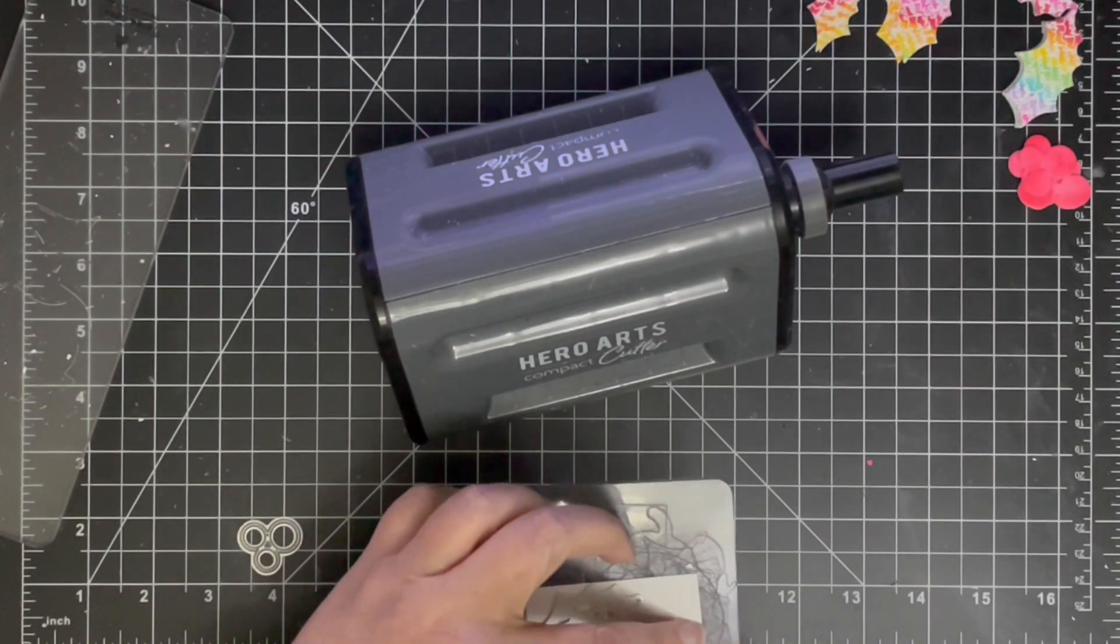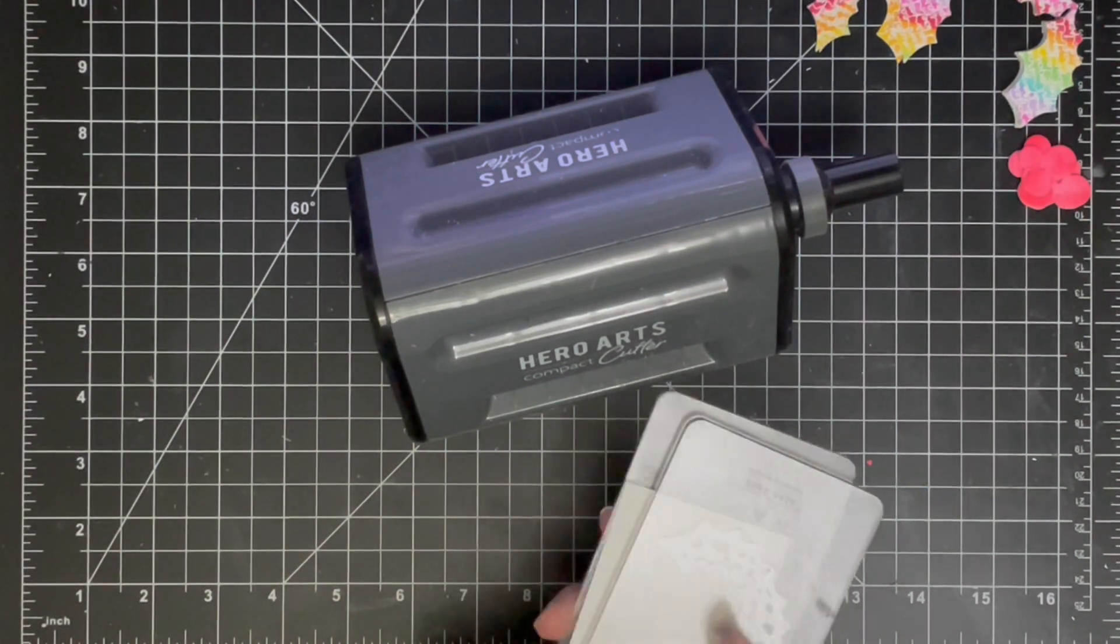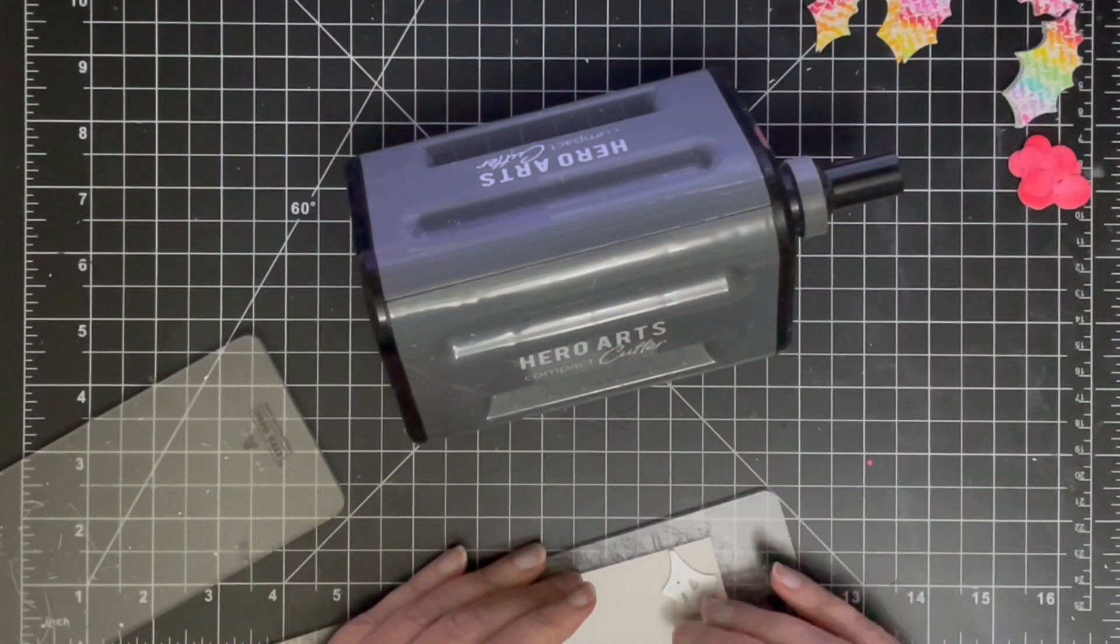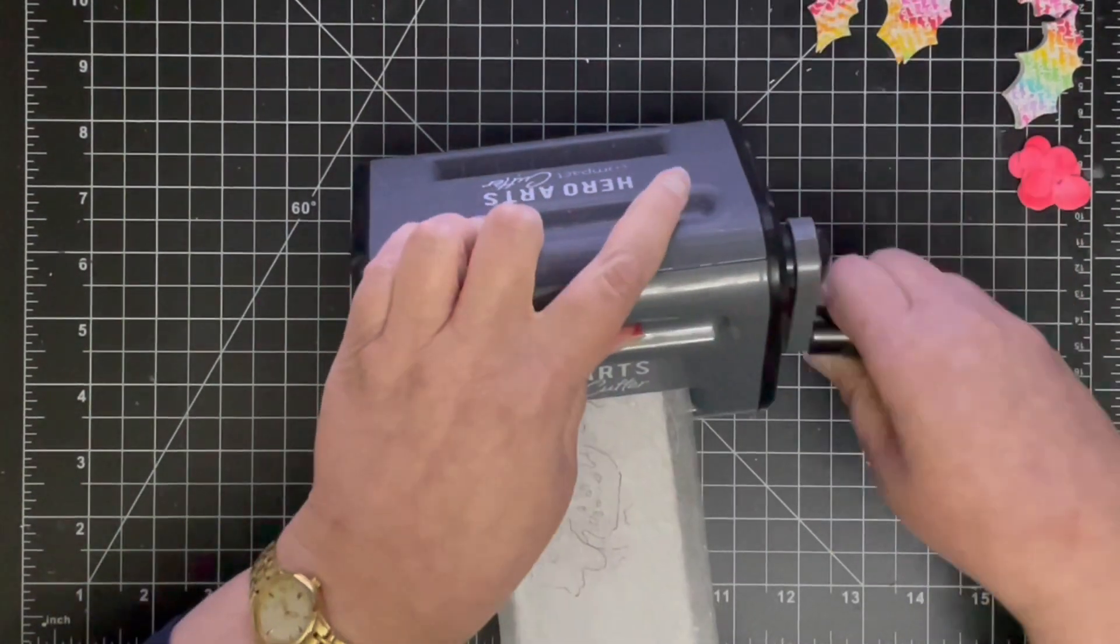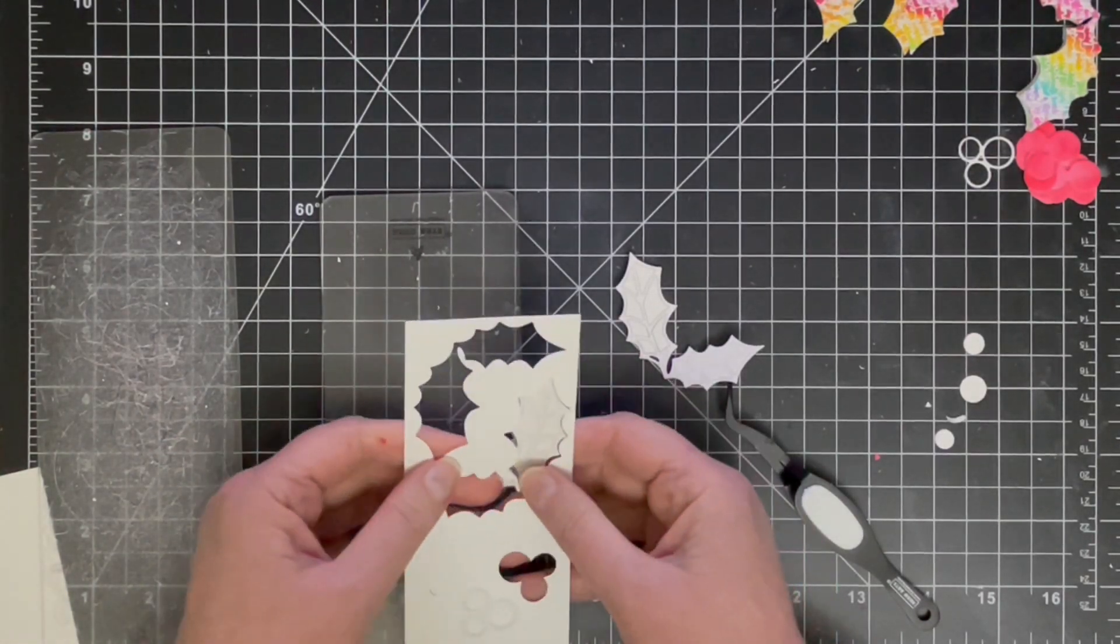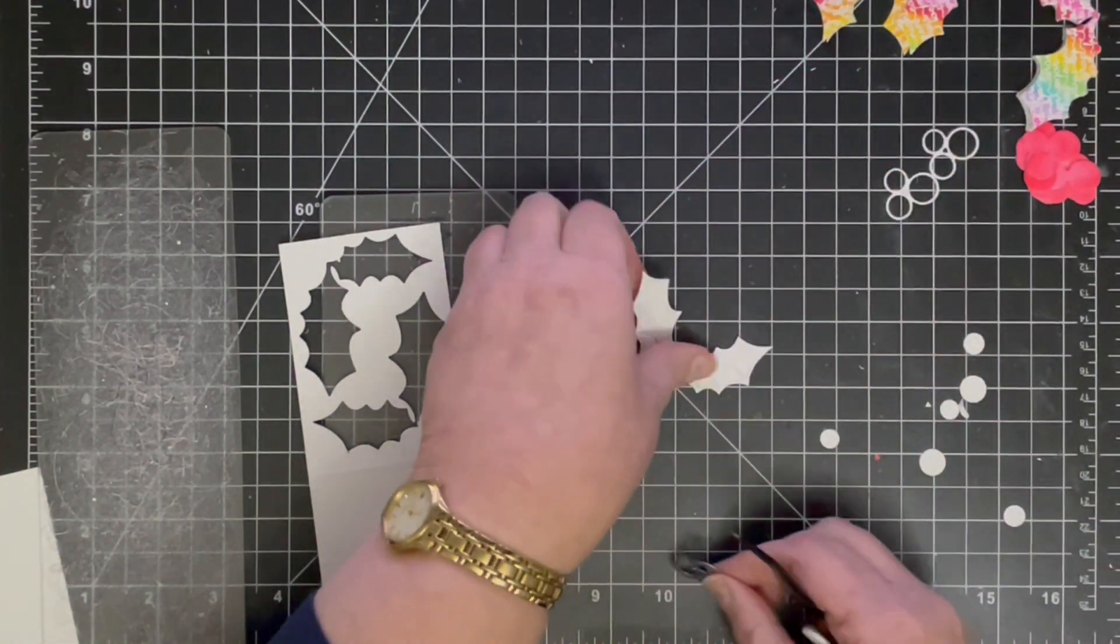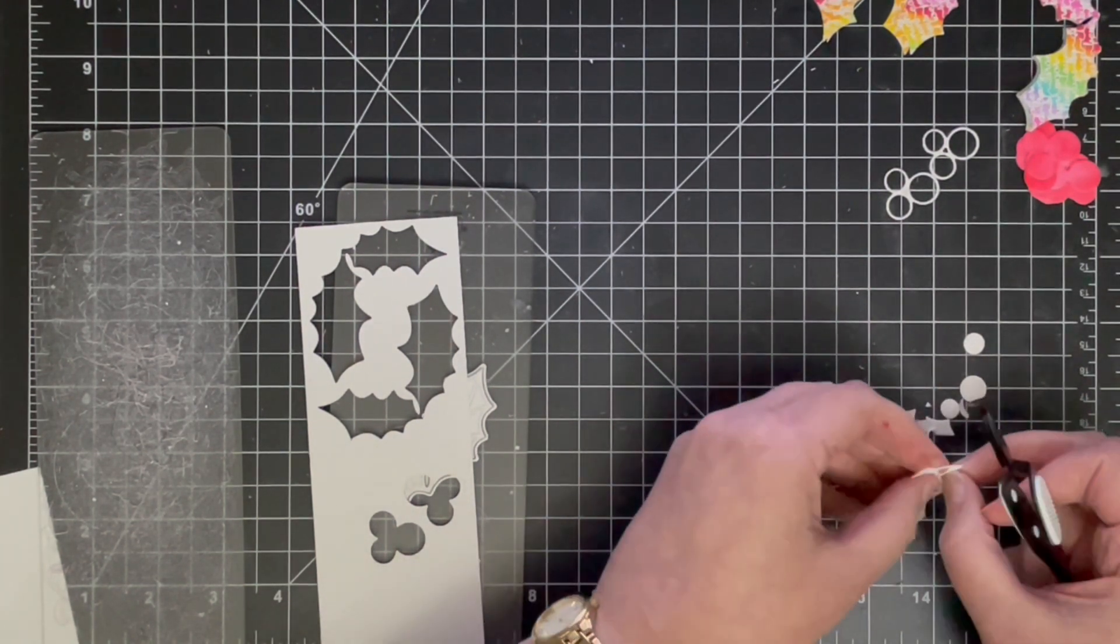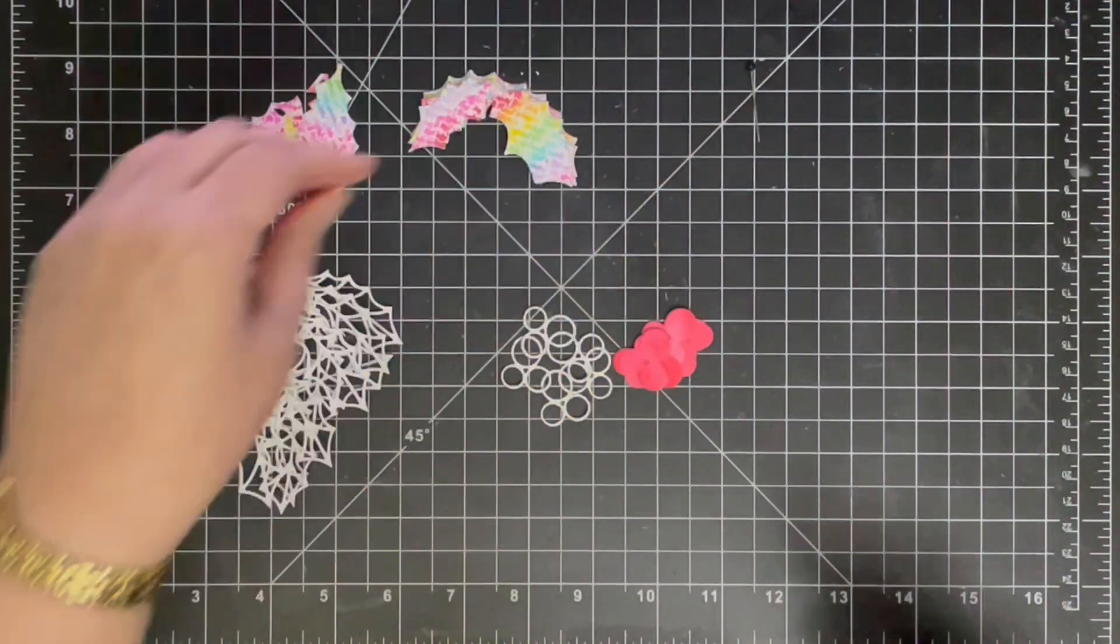Once I've done all of the rainbow holly leaves, I'm then moving on to the outlines. So with the outlines, I'm just using plain white cardstock. The cardstock I'm using here is Neenah Solar White, 110-pound weight. Sometimes it's easier to die cut with a thinner cardstock, one that's slightly lower weight, but with these I wanted to make sure that these outlines were sturdy enough that they didn't tear. So I use the heavier cardstock. It just means that sometimes you might need to run the die through the die cutting machine twice to get a really good cut.